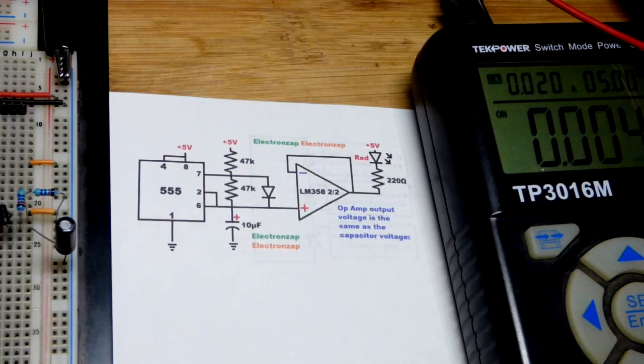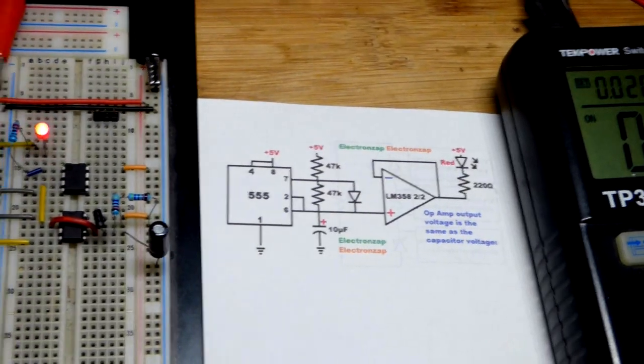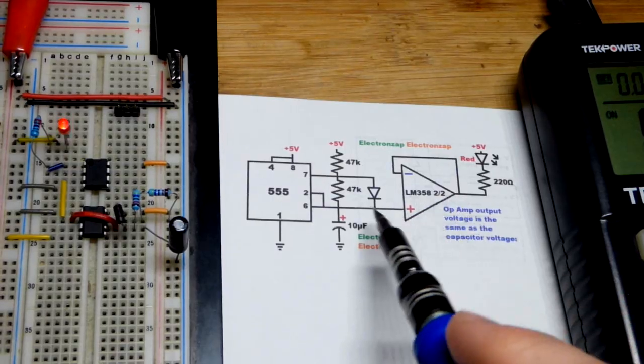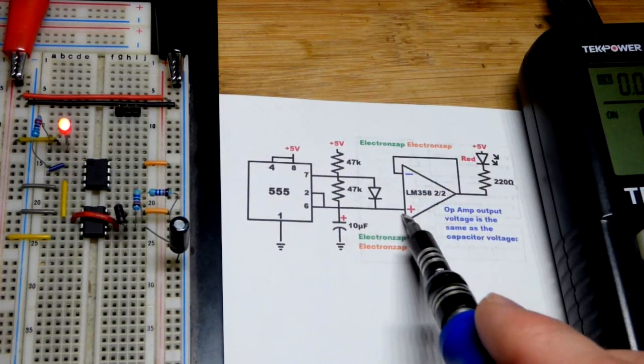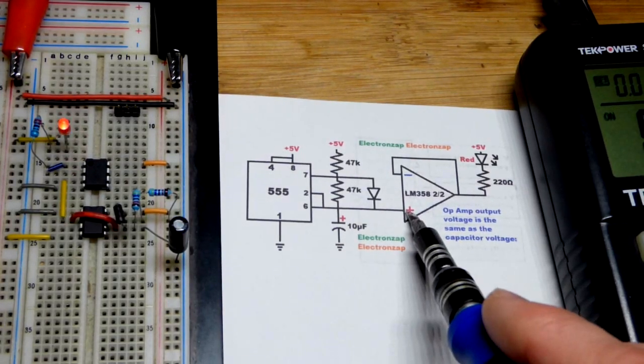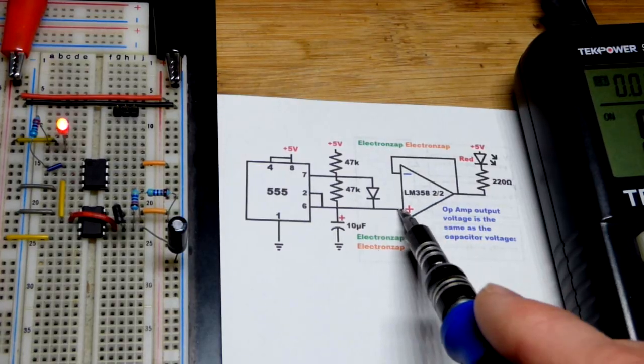We have it wired as a voltage follower, so the voltage at the output is based on what the capacitor voltage is. The capacitor cannot provide power though, that's why we have the amplifier. It's just looking at the voltage.